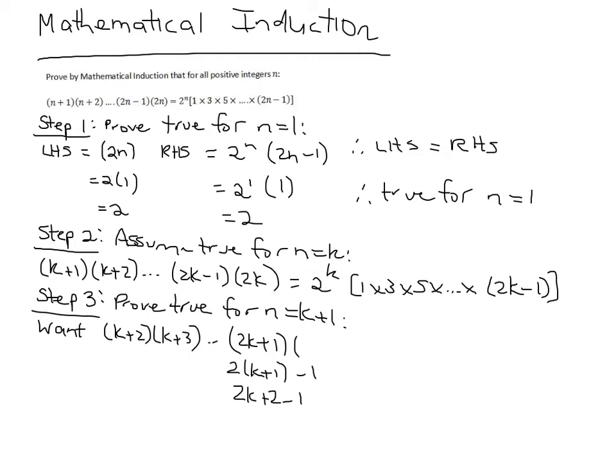And then it's 2n, which is 2 outside of k plus 1. So that's 2k plus 2.